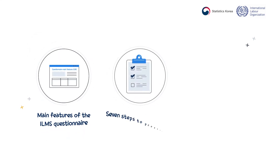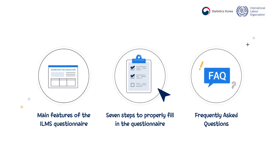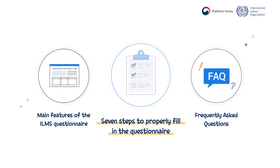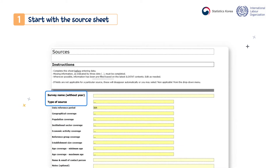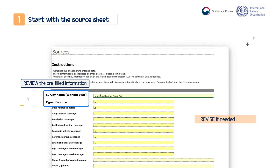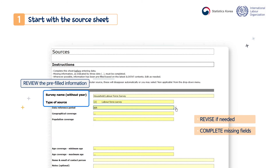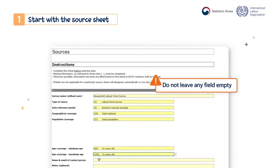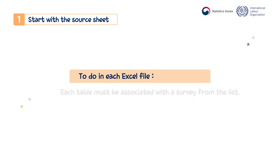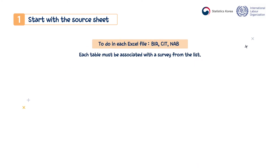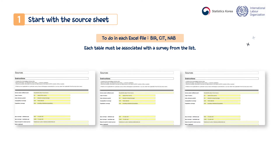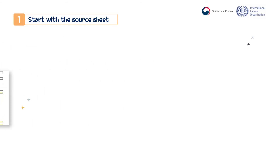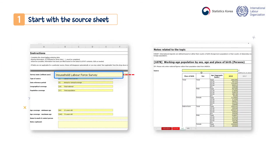Let us move on to more detailed instructions on how to fill in the questionnaire. Here are seven steps to follow to properly fill in the ILMS questionnaire. The first step is simple: always start with the source sheet first. In the source sheet, please review the pre-filled information if available and correct it whenever necessary. Then complete the missing fields by selecting the relevant option in the drop-down menus — please do not leave any field empty. The source sheet must be completed in each Excel file — the BIR, the CIT, and the NAB file — even if the same data source is used in all files. This step will allow you to link each indicator table to the relevant data source afterwards.